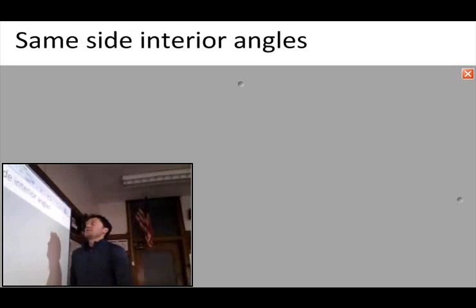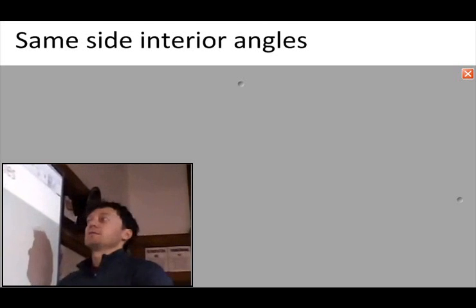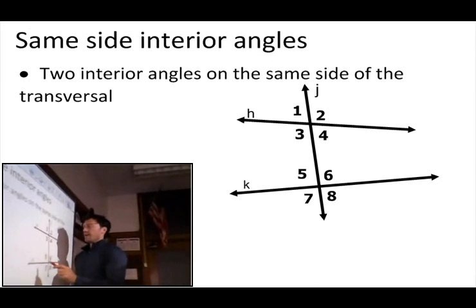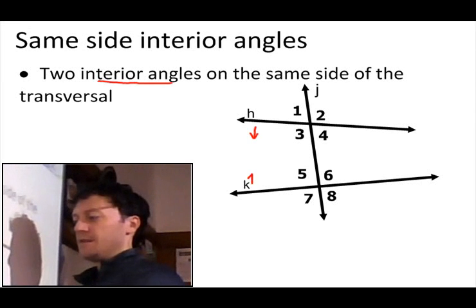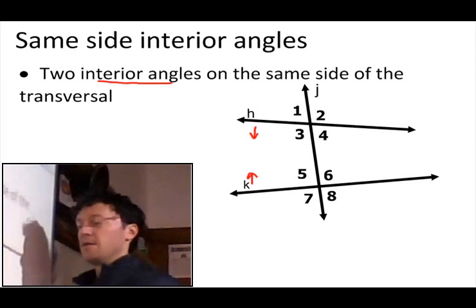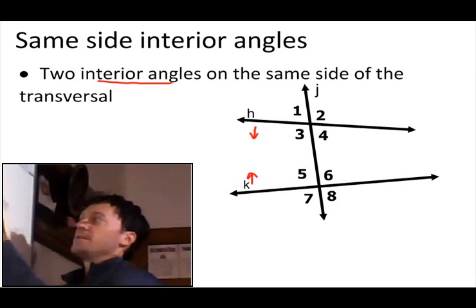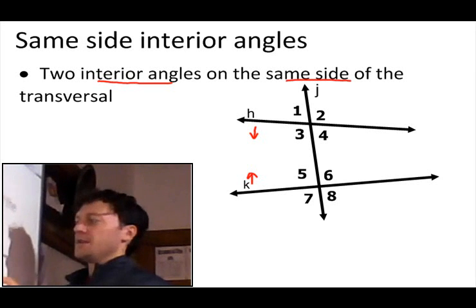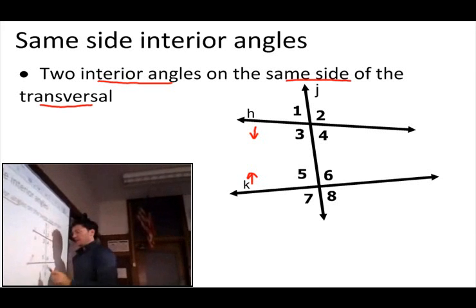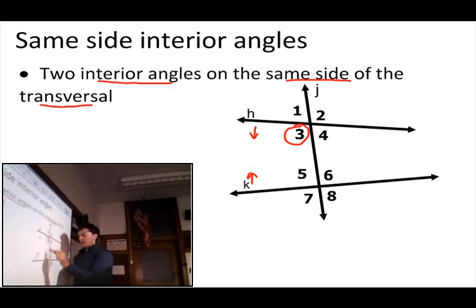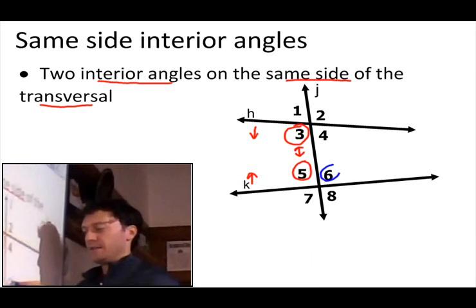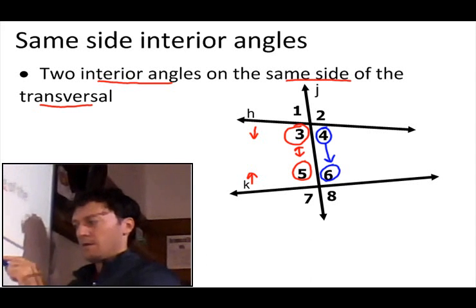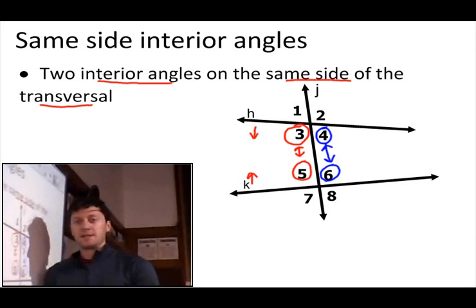Then we've got same side interior angles. They're on the inside of the lines being cut by the transversal, but on the same side of the transversal. So that means 3 and 5 are same side interior angles, and 6 and 4 are also same side interior angles.